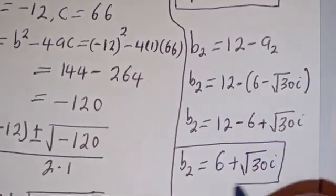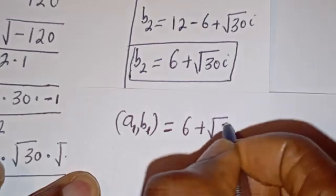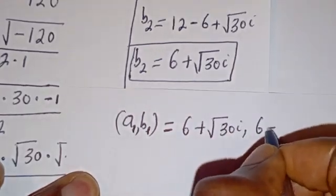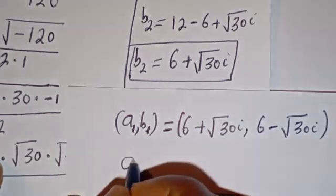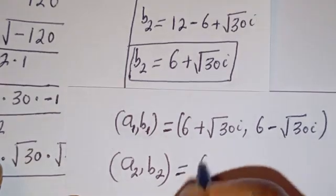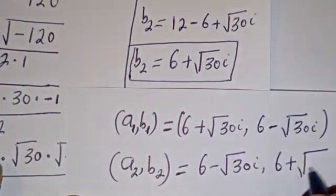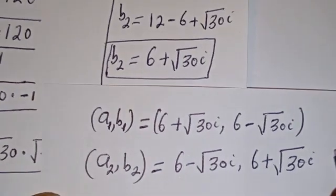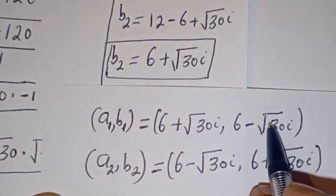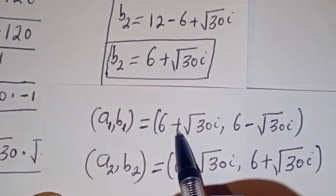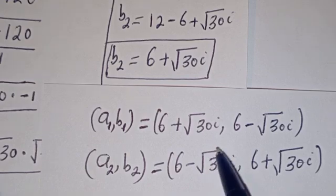This is the value of B2. So: A1, B1 equals (6 plus square root of 30 i, 6 minus square root of 30 i), and A2, B2 equals (6 minus square root of 30 i, 6 plus square root of 30 i). We can see that the value of A1 is equal to the value of B2, and the value of B1 is equal to the value of A2. Let's check to confirm if this answer is right.